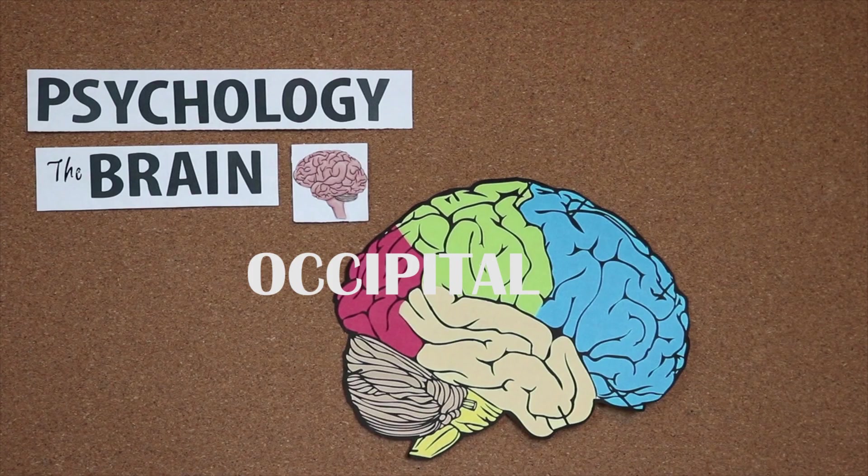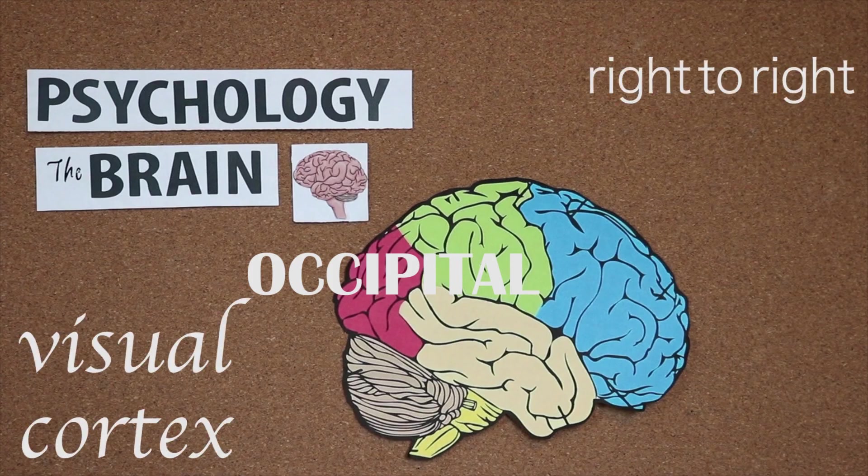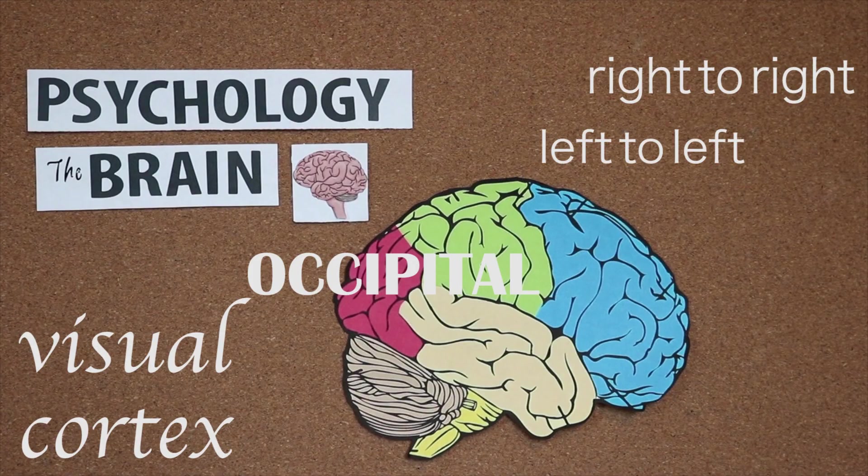The occipital lobes are furthest from our eyes, but house our visual cortex. When your right eye sends visual information to the brain, it's interpreted by your right occipital lobe. And when your left eye does so, it's interpreted by your left occipital lobe.